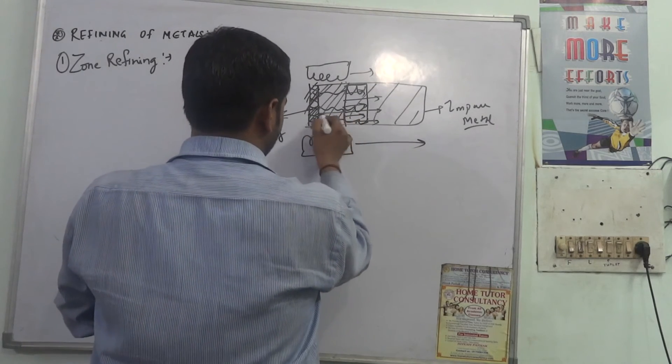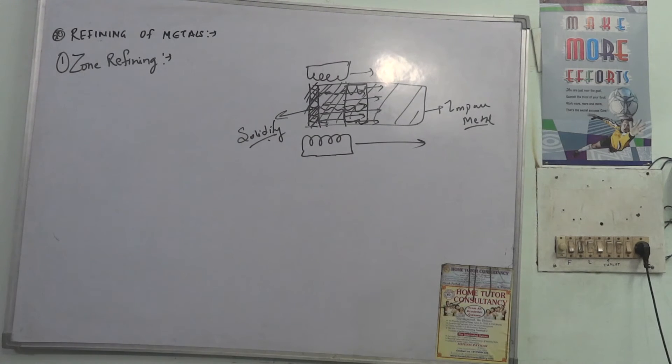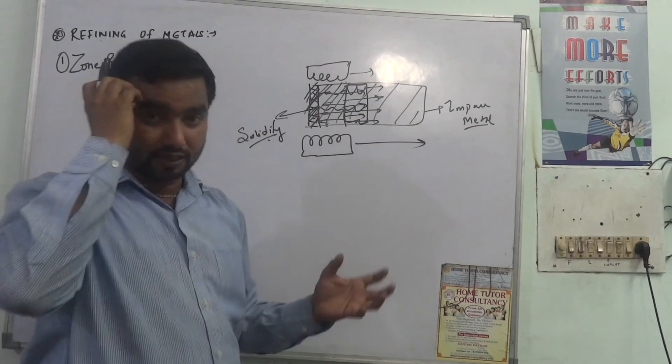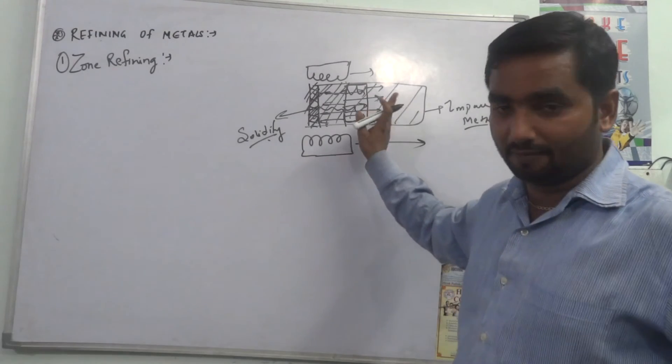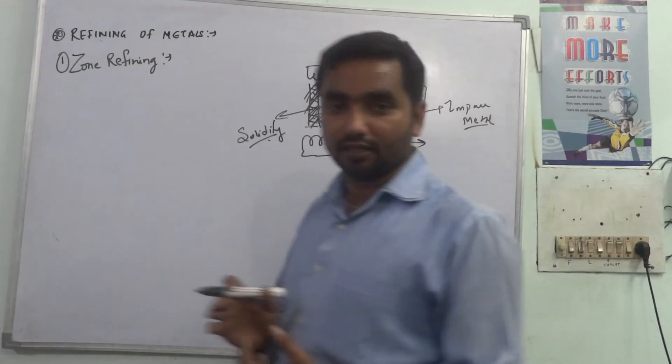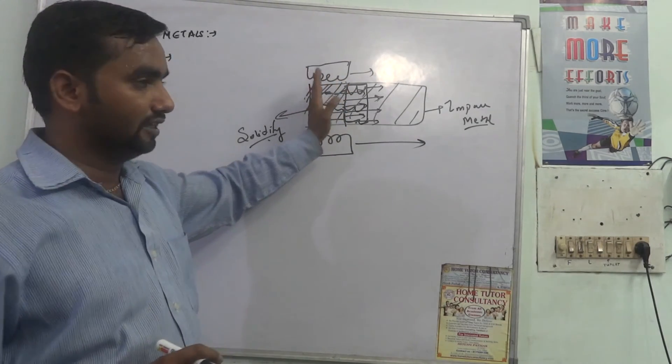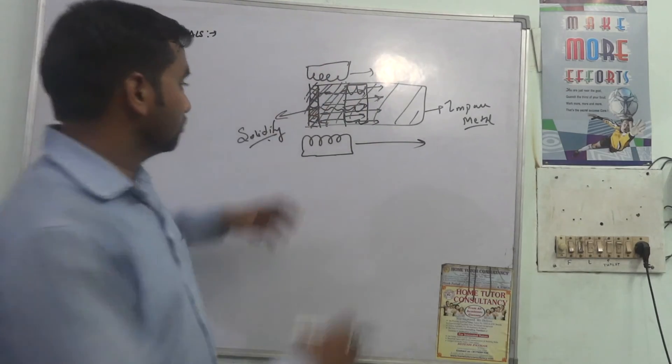This is called zone refining because it consists of a particular zone to be purified first from a bar or a rod, and the impurities always remain in molten state. Why is it so? Because the impurities are having low melting point than the pure metals, so the impurity is always in molten state and the pure metal solidifies.